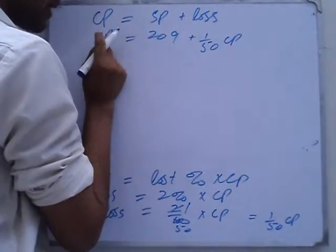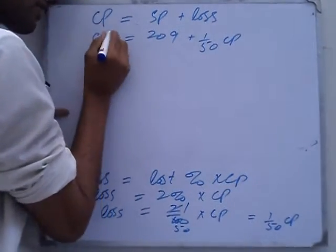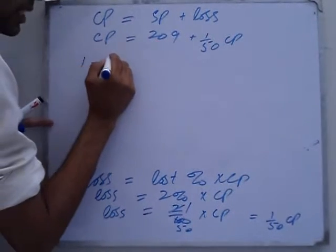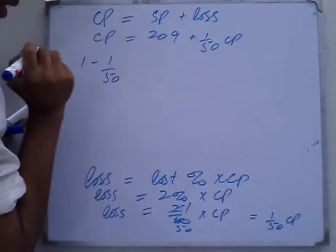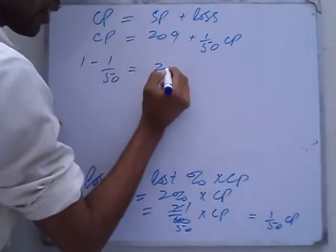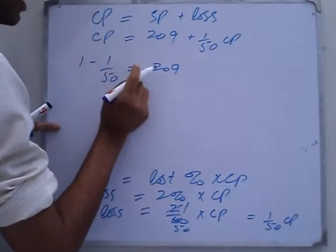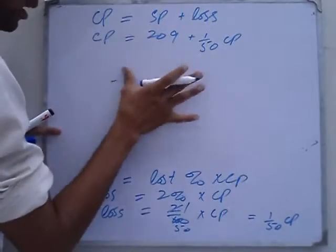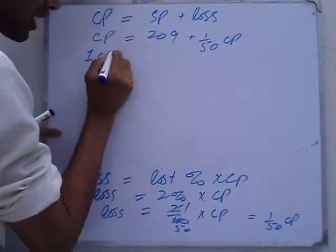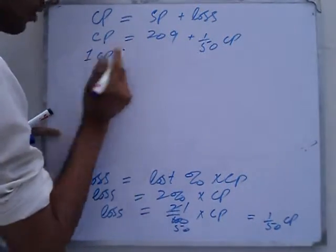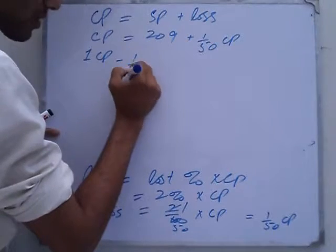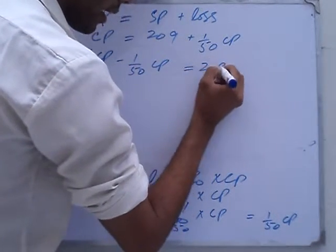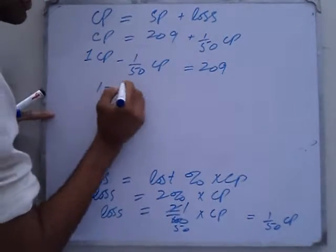And here we have cost price. So rearranging: 1 minus 1 over 50 into cost price equals 209. Taking it step by step: 1 into cost price minus 1 over 50 into cost price equals 209, giving us 1 minus 1 over 50 into cost price equals 209.